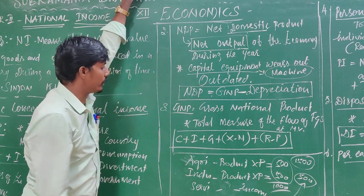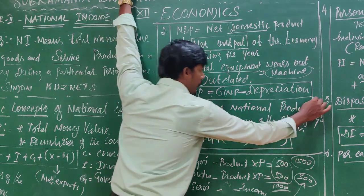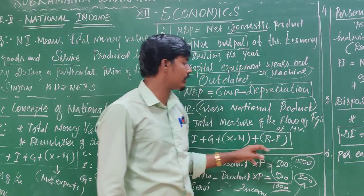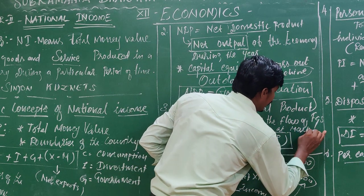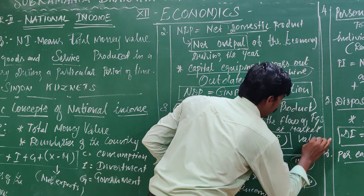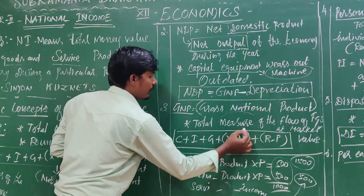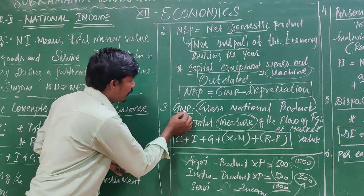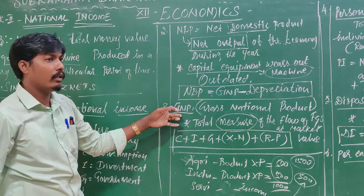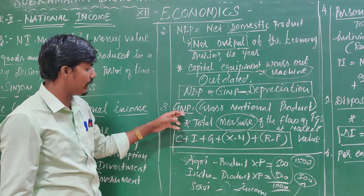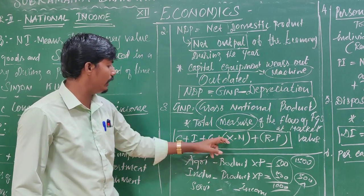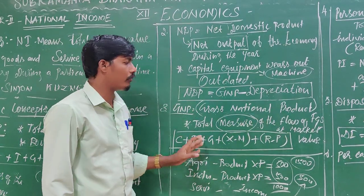Another one: GNP — Gross National Product. Gross National Product means the total measure of the flow of final goods and services at market value. If you have a market value, we can measure the value of GNP. Compared to GDP, GNP includes income from nationals abroad.